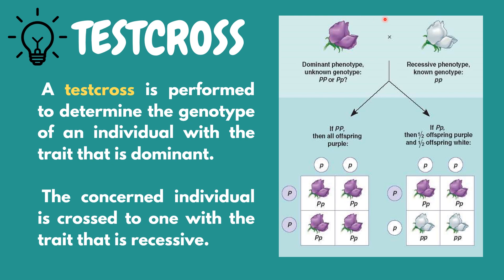Based on the picture, a dominant phenotype, which is a purple flower, is crossed with a recessive phenotype, which is a white flower. A purple flower can have two different genotypes — it can be homozygous dominant or heterozygous dominant. In this example, there can be two possible test crosses. A cross between a homozygous dominant purple flower with a homozygous recessive white flower, and a cross between a heterozygous purple flower with a homozygous recessive white flower.